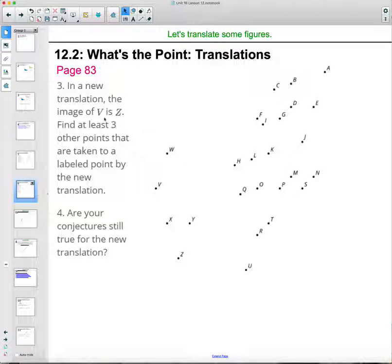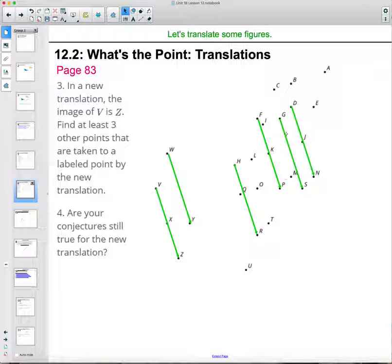So now in a new translation of V, the image of V is Z. So V actually goes to Z. So now V is translating to Z. So label at least three other times where this happened. So are your conjectures still true? So mine was that they look parallel to each other. So the translation when you connect the image to the pre-image look like they're gonna be parallel to each other. And that is holding true in this one as well.